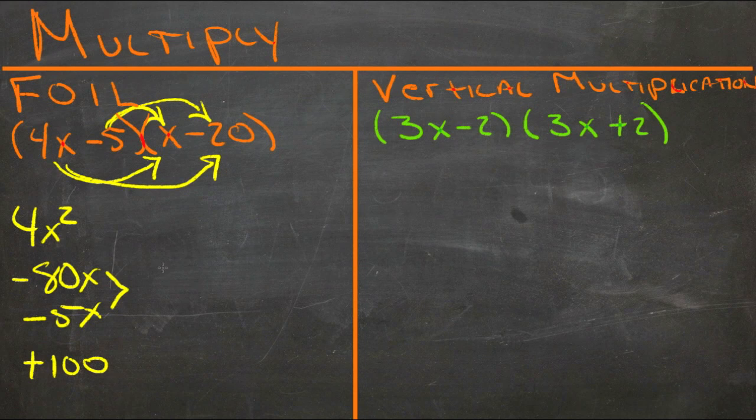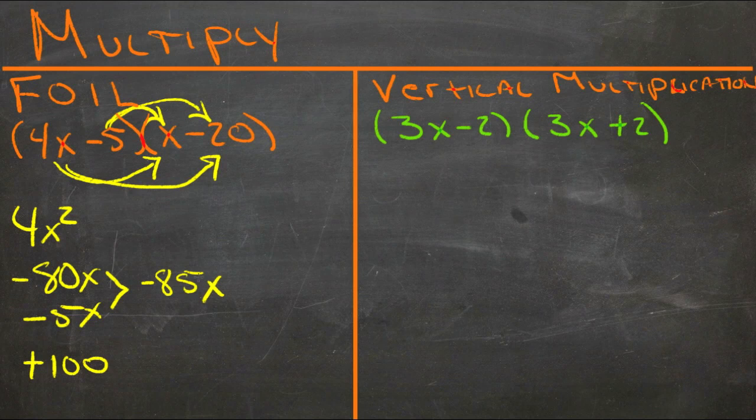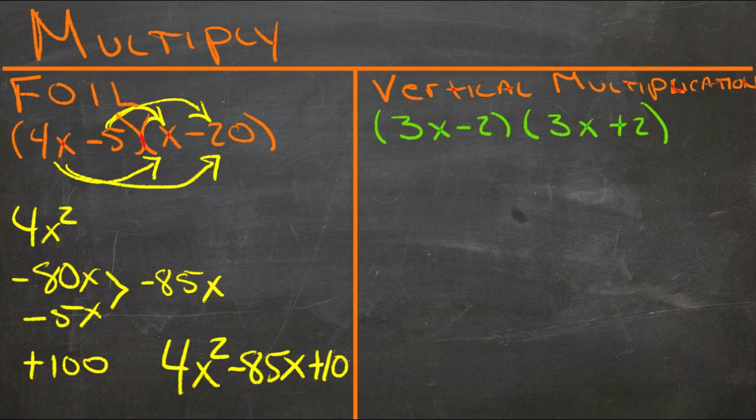And our last two terms. Negative 5 times negative 20 is positive 100. And as usual, our middle two terms combine, giving us negative 85x. So our final trinomial here is 4x squared minus 85x plus 100.